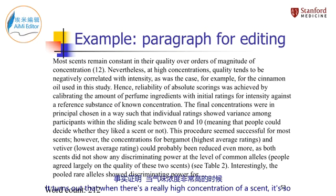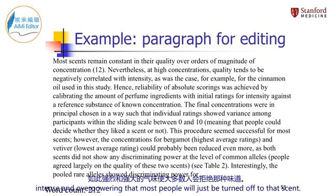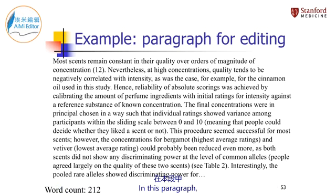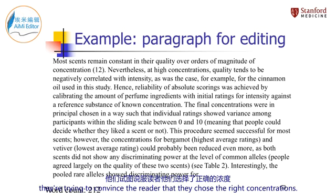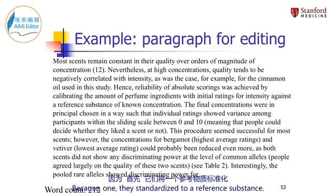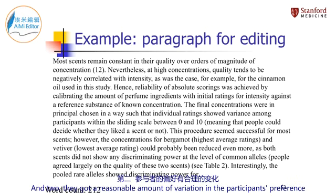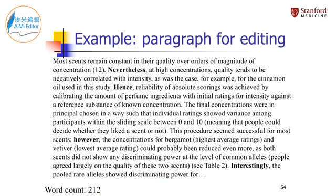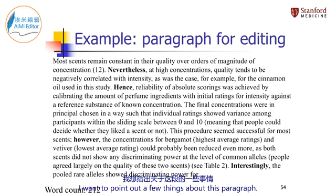It turns out that when there's a really high concentration of a scent, it's so intense and overpowering that most people will just be turned off to that scent. So you don't want to put everything at too high of a concentration. In this paragraph, they're trying to convince the reader that they chose the right concentrations because, one, they standardized to a reference substance, and two, they got a reasonable amount of variation in the participants' preferences for the scents, suggesting that none of the scents were universally overpowering. I want to point out a few things about this paragraph.